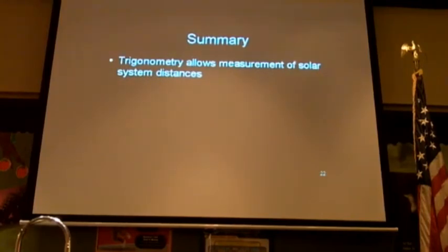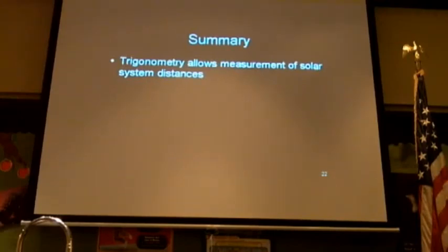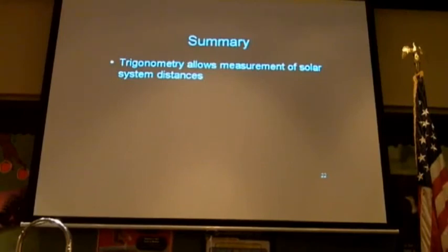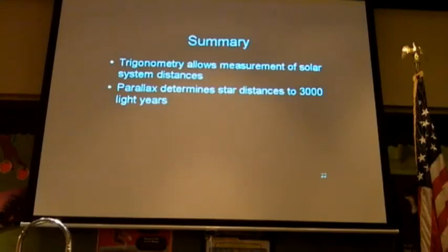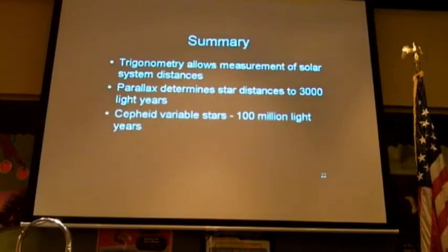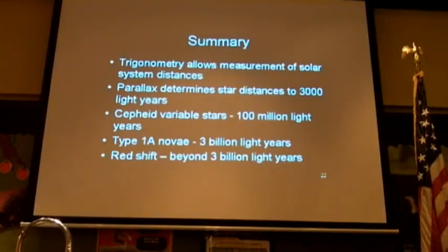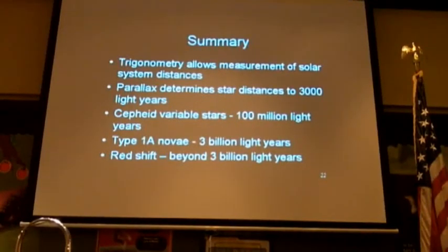So always get the question when we say at star parties, how do you know that star is 1,500 light years away? One way is trigonometry, as we discussed. Parallax, to a certain distance out, about 3,000 light years. Cepheid variables, out about that far. Type 1A supernova, out to about 3 billion light years. And then red shift, beyond that. And those are the measurements that astronomers use to measure distances. And depending on the distances, which method they'll use.